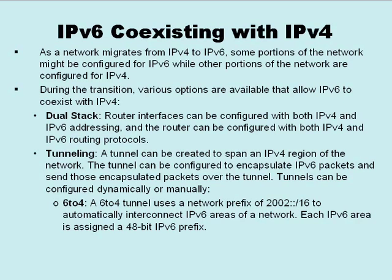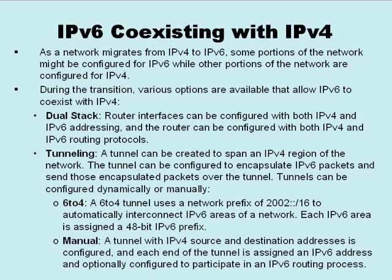What we're going to demonstrate in this lab is a manual tunnel. We'll manually create a tunnel by specifying source and destination IPv4 addressing. Once the tunnel is up, the virtual tunnel interfaces on the routers at each end can be assigned IPv6 addressing. Optionally, we could configure them to participate in an IPv6 routing process — specifically, OSPF version 3, which is already configured on those routers.